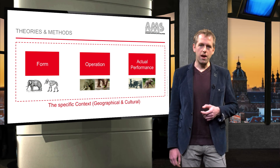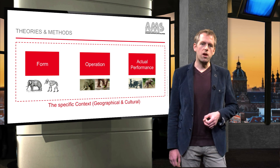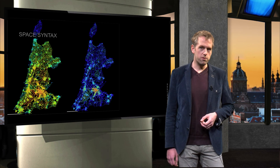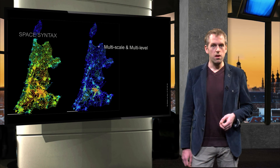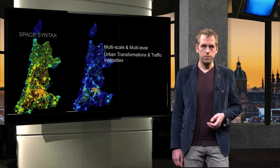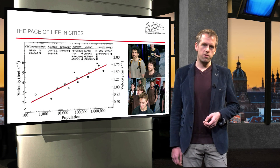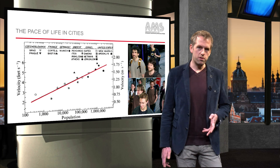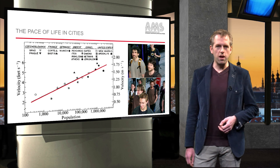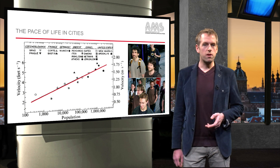The link between form, operation and actual performance is presented in several theories on cities, albeit implicitly. Space syntax is a method on how urban space networks relate to socio-economic characteristics; it is multi-level and multi-scale. It deals with both urban transformations and traffic intensities, velocities and many other factors — operation — and is about social, economic and cognitive performances. In the second example, several indicators show that the pace of social life in cities increases with population size; we see here the velocity of pedestrians in relation to population size. Social life can be expressed in terms of rates of innovation, wealth creation, patterns of consumption, human behavior and properties of urban infrastructure.